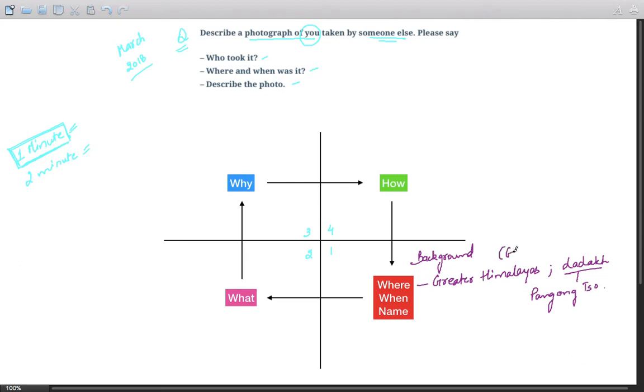This is all you have to write, write it really quick. Greater Himalayas, even you can use code words like GH. Ladakh - I was in Ladakh at Pangong, so this was something which is a lake. You don't need to write lake in your exam, there's absolutely no need. When was it? Perhaps it was last year, 2017 or 2016, that entirely depends upon you. You can even write the month, so November or December, whatever suits you.